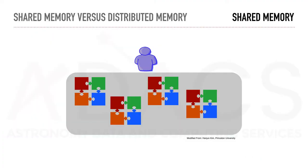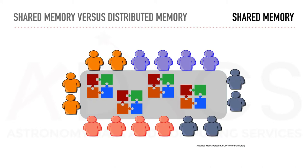Now let's get back to the concepts of shared and distributed memory. Imagine you want to put back together a puzzle made out of a thousand pieces. Doing it by yourself might take you, say, 10 hours. Now imagine that you try to solve this same puzzle as a team with your friends, all sitting around the table. You can even split everyone into small sub-teams to help coordinate the work. Depending on the size of your team, you will be able to reduce the overall time to solve the puzzle.